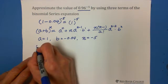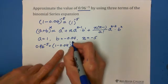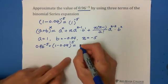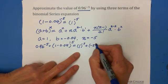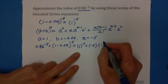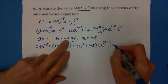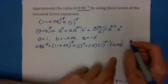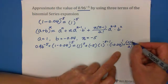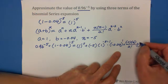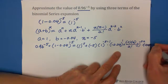So 0.96 to the negative 5 equals 1 minus 0.04 to the negative 5 exponent equals, the first is a, and a is 1, 1 to the negative 5 exponent, plus n is negative 5, multiply a is 1 to the negative 5 minus 1, and b is negative 0.04 to the 1 exponent, then plus 2 factorial, this is negative 5 times negative 6, multiply a is 1 to the negative 5 minus 2, times b is negative 0.04 to the square.